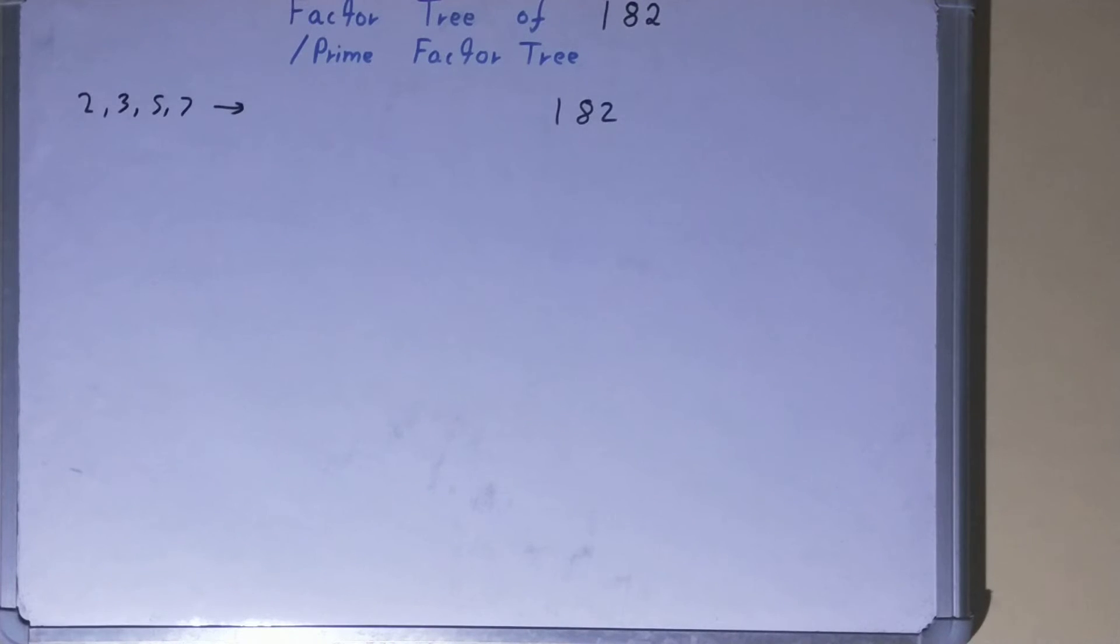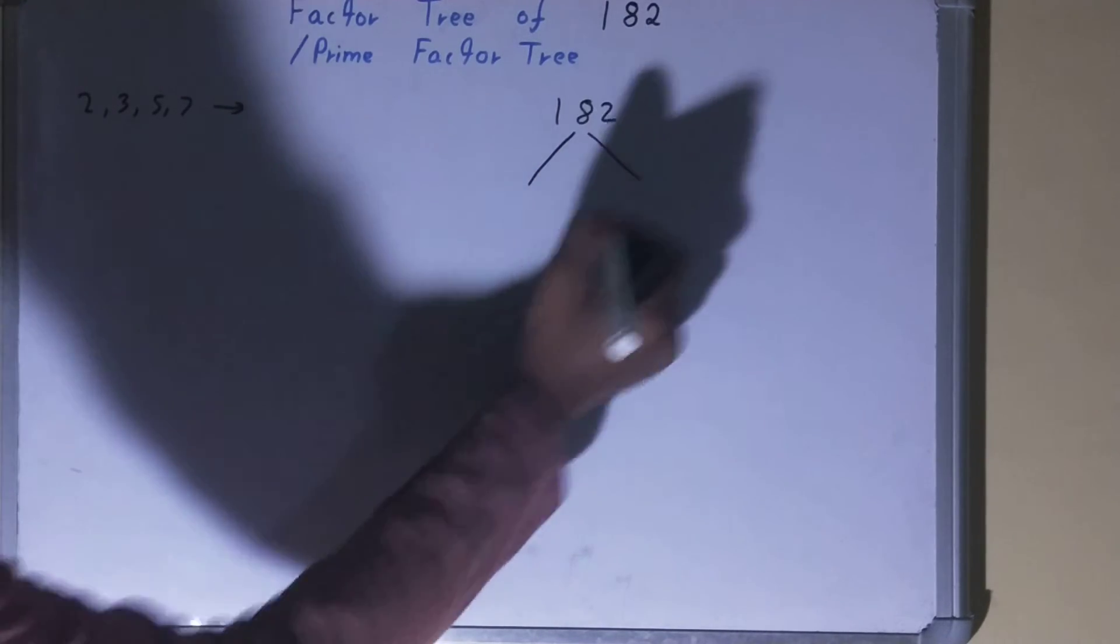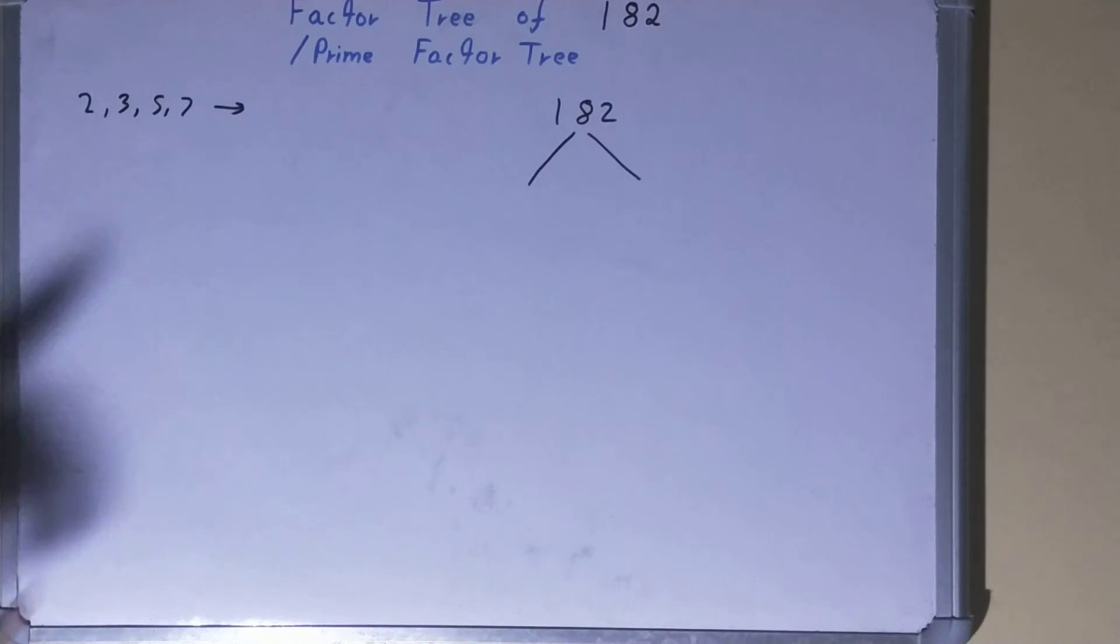You must know that the ending nodes or the terminating nodes of a factor tree is made up of prime numbers like 2, 3, 5, 7, and so on. What we do is we factorize the number to groups of two, and the rule is one of the numbers should be a prime number.